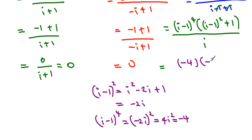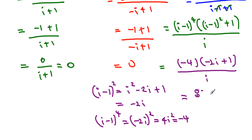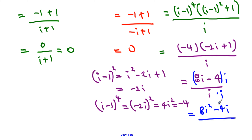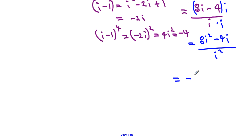Continuing: negative 4 times (negative 2i plus 1) gives 8i minus 4, all over i. Multiplying top and bottom by i gives 8i² minus 4i over i². Since i² equals negative 1, we get negative 8 minus 4i over negative 1, which becomes 8 plus 4i as our final answer.